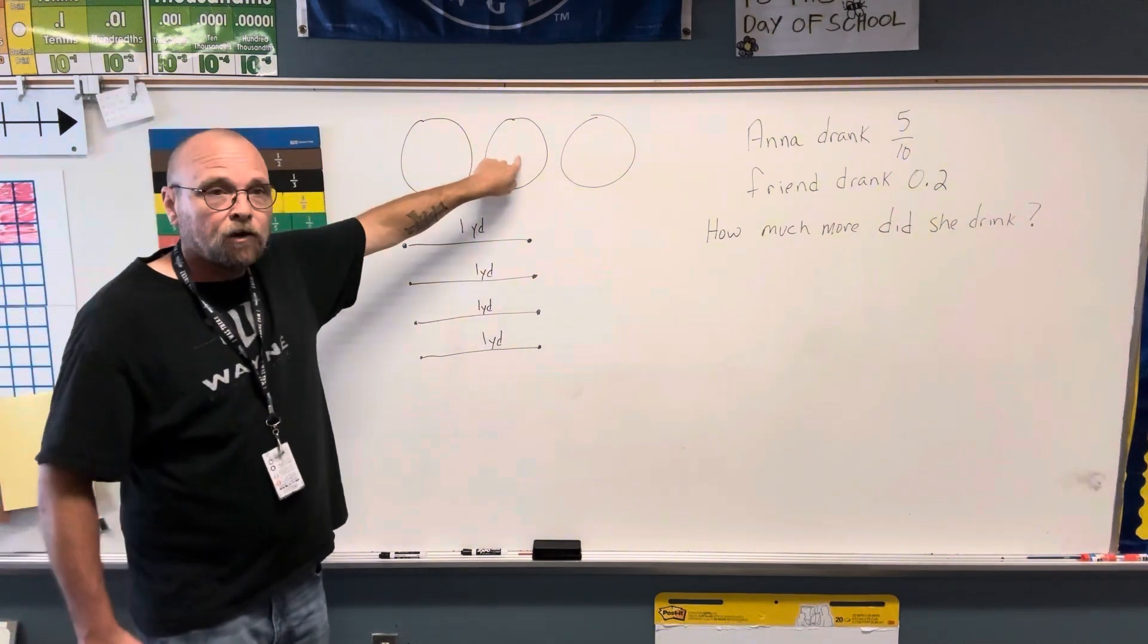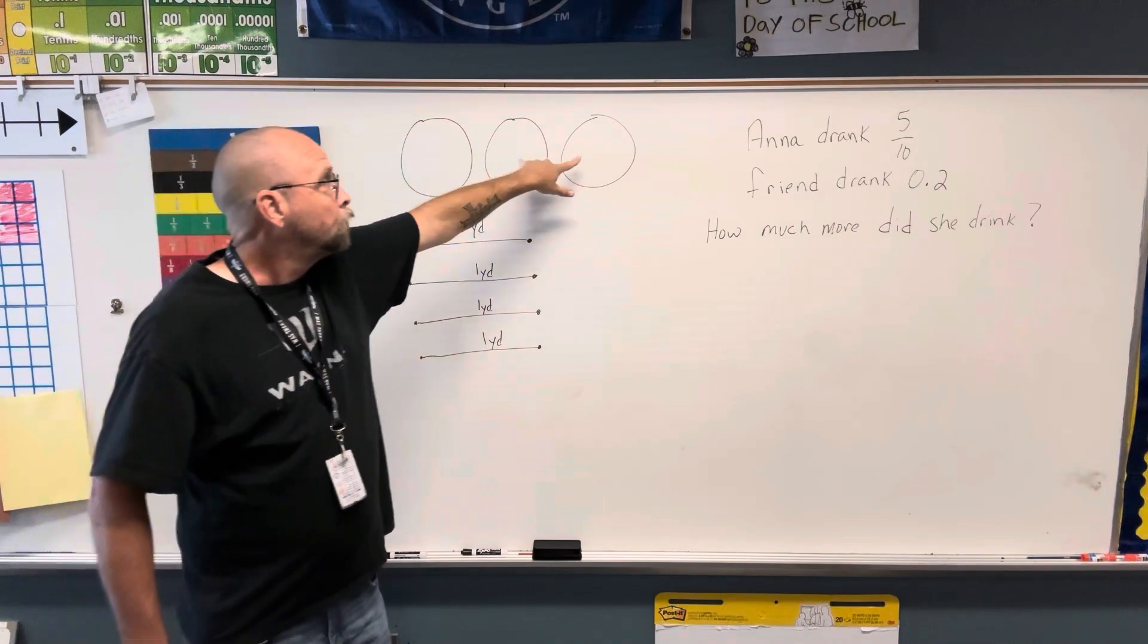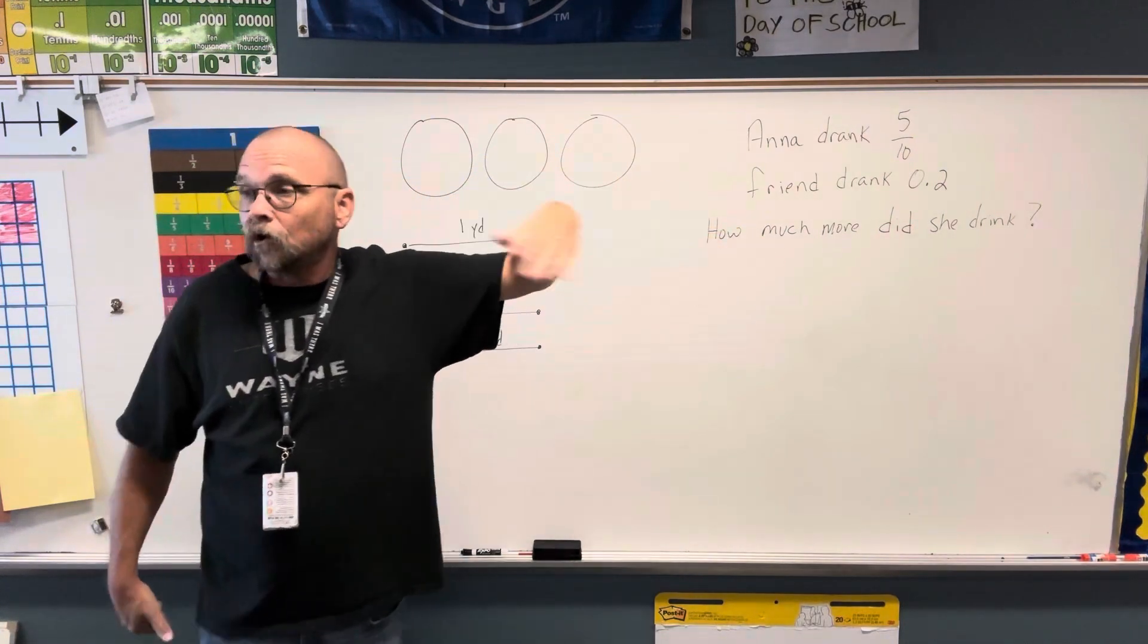Seven. How many are in two circles? Fourteen. And in three circles? Twenty-one. Your answer is twenty-one.